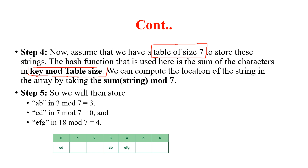Now I'll apply the hash function on those numeric values. Hash function is key modulus table size. For ab: 3 modulus 7 = 3, so ab is stored at the 3rd index. For cd: 7 modulus 7 = 0, so cd is stored at the 0th index. For efg: 18 modulus 7 = 4, so efg is stored at the 4th index.